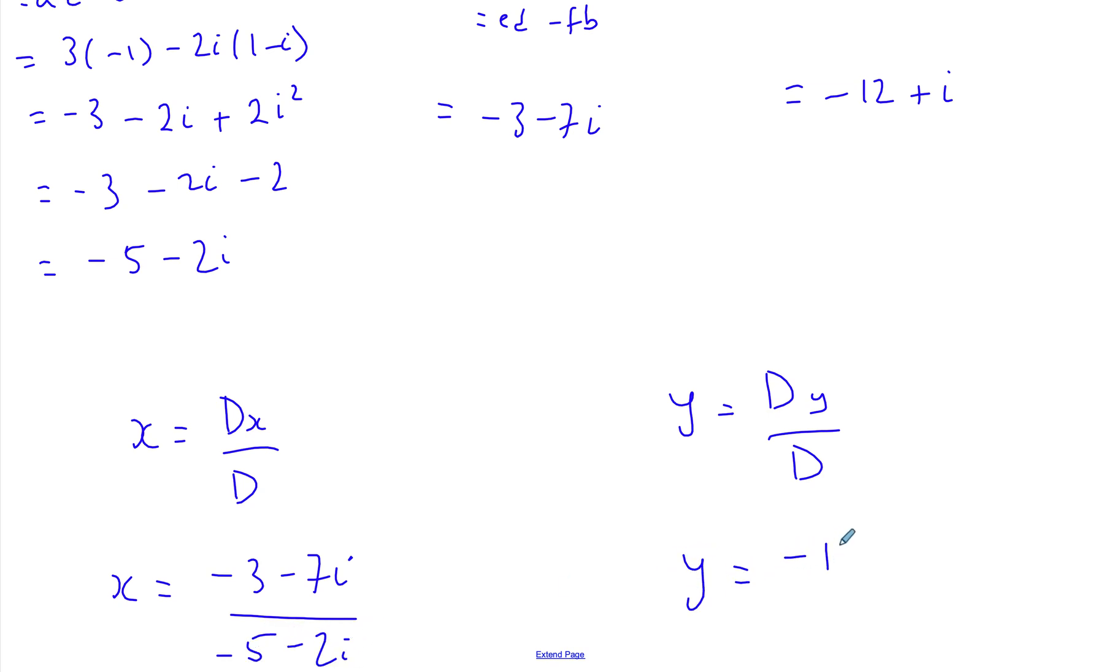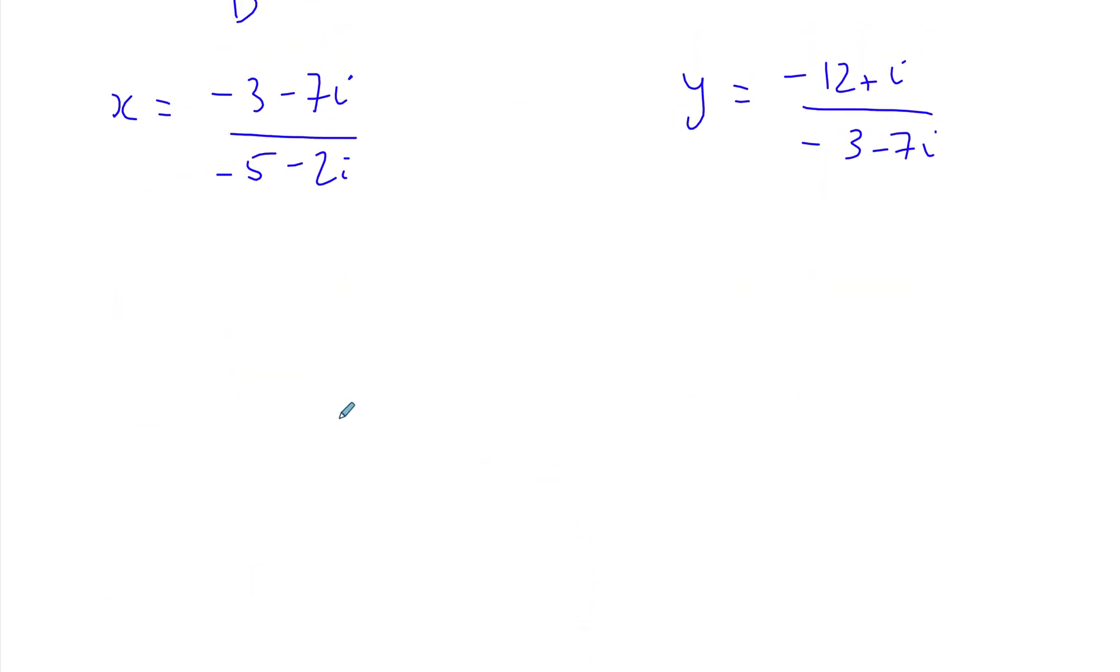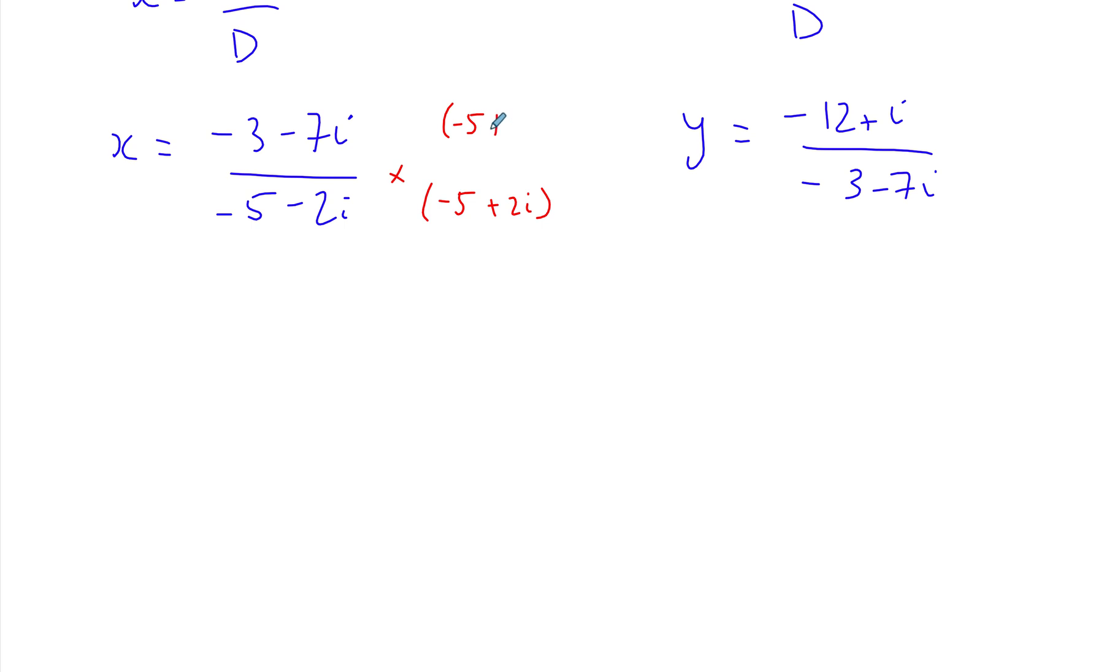And y is -12 + i divided by -5 - 2i. We don't leave complex numbers as such; you have to change them by multiplying by the conjugate, which is -5 - 2i, so -5 + 2i.